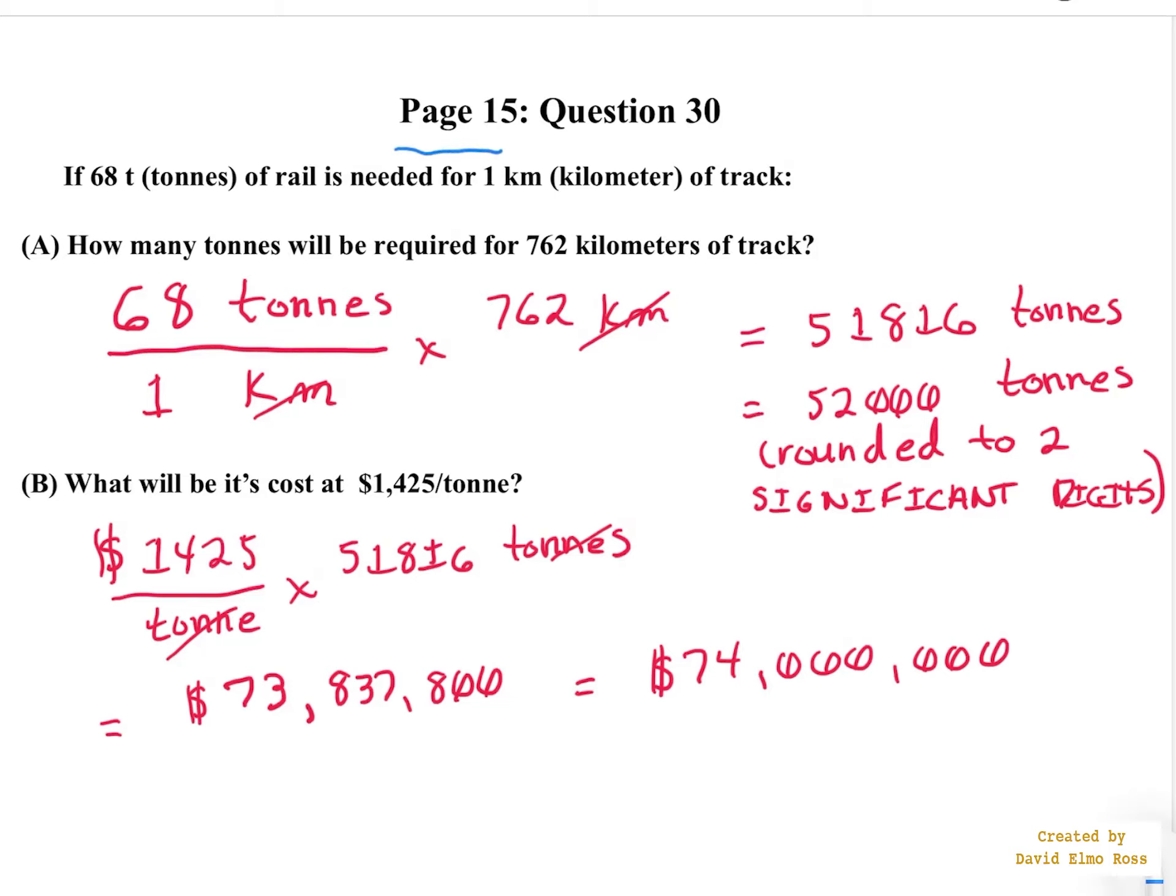This is a solution for page 15, question 30. It says, if 68 tons of rail is needed for one kilometer of track, how many tons will be required for 762 kilometers?